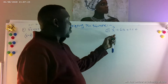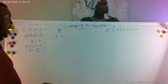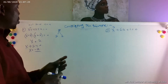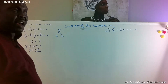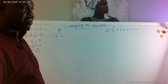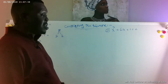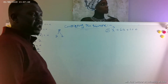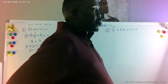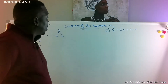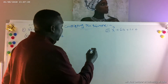For an equation that cannot be solved by factoring, I have to use two methods: completing the square, and also the quadratic formula — sometimes called QF. The next topic we will use is the quadratic formula.